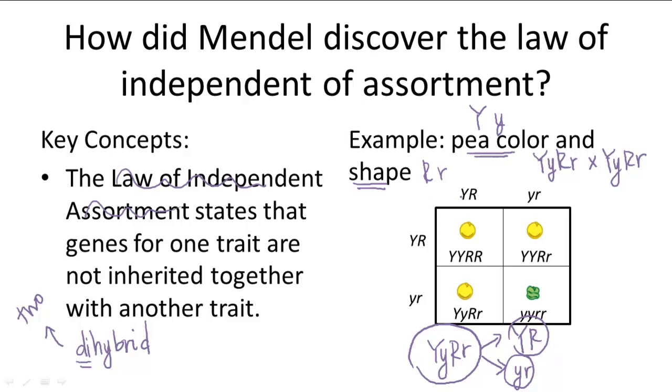That means our Punnett square looks like this. Big Y, big R, little y, little r, and same thing on the side. And so our only genotypes, or phenotypes sorry, would be yellow round and green wrinkled.